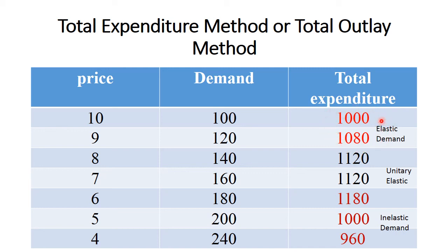The first two rows. Then after that, price is again falling from 8 to 7. Total expenditure has remained constant and therefore it is unitary elastic demand, 1120. Again, price is falling from 6 rupees to 5 rupees, 5 rupees to 4 rupees. But total expenditure is declining and therefore in this range, the demand is said to be inelastic. Thank you for watching guys.